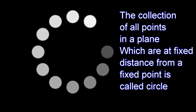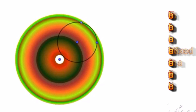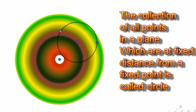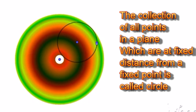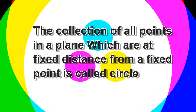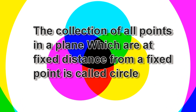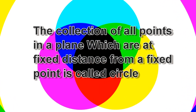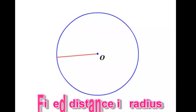The collection of all points in a plane which are a fixed distance from a fixed point is called a circle. The fixed point is called the center, and the fixed distance is called the radius.